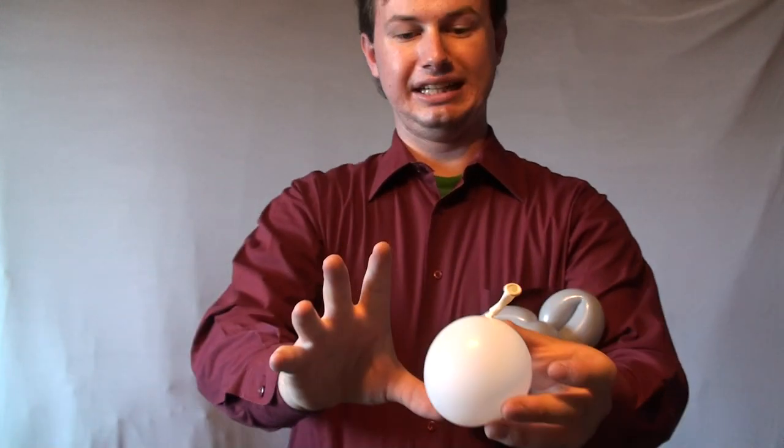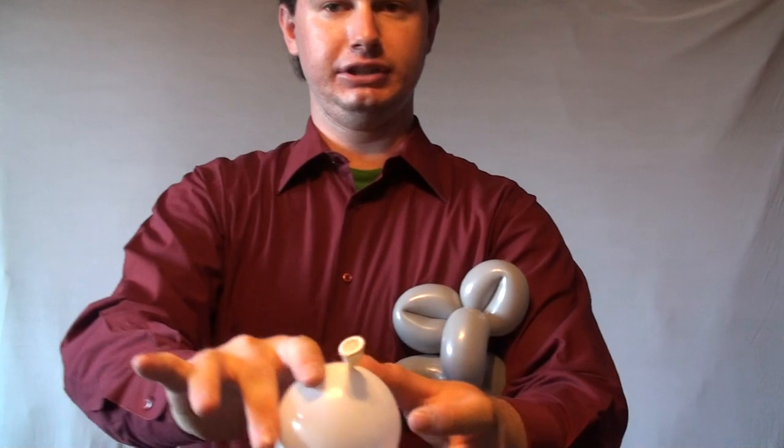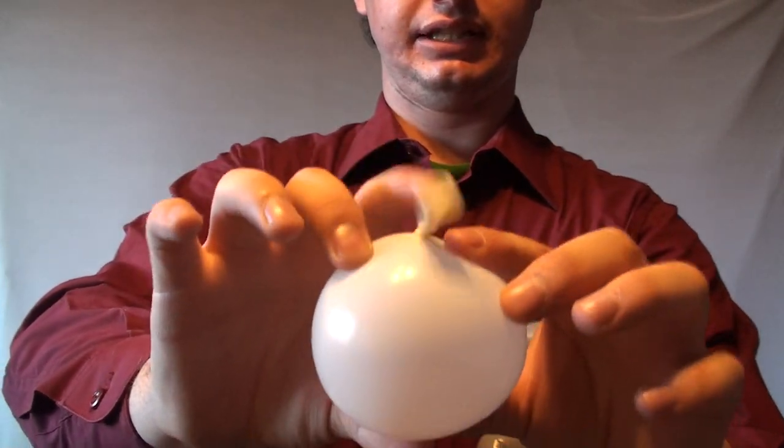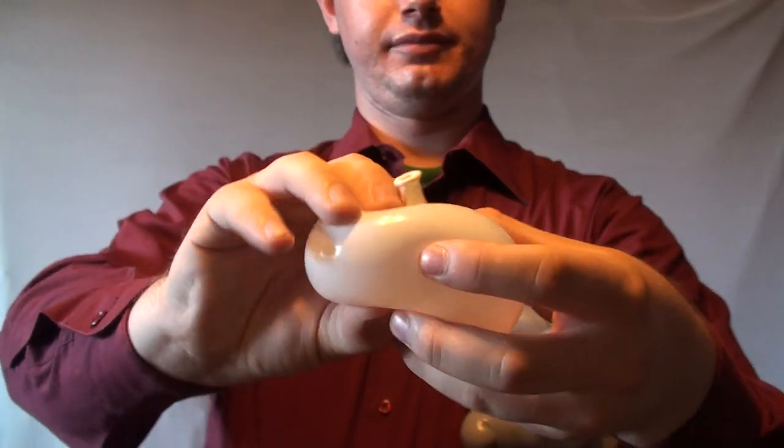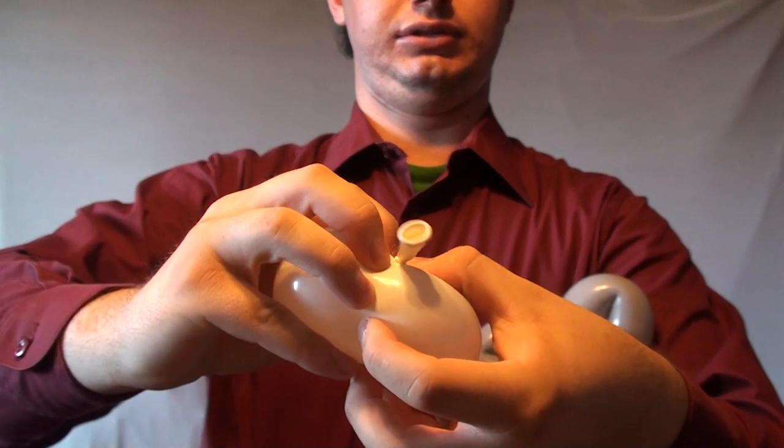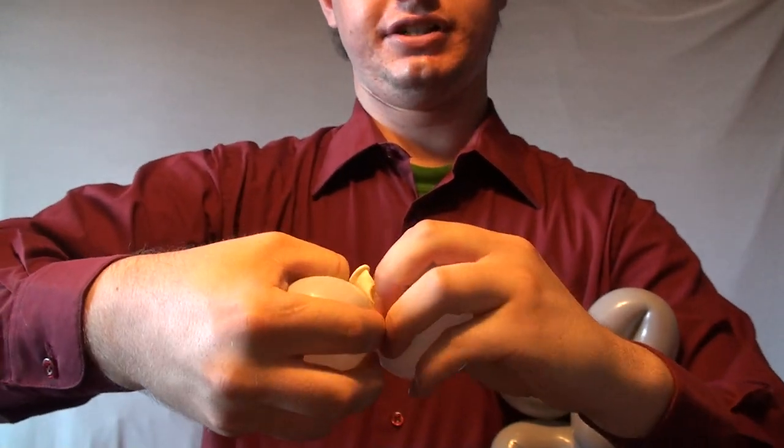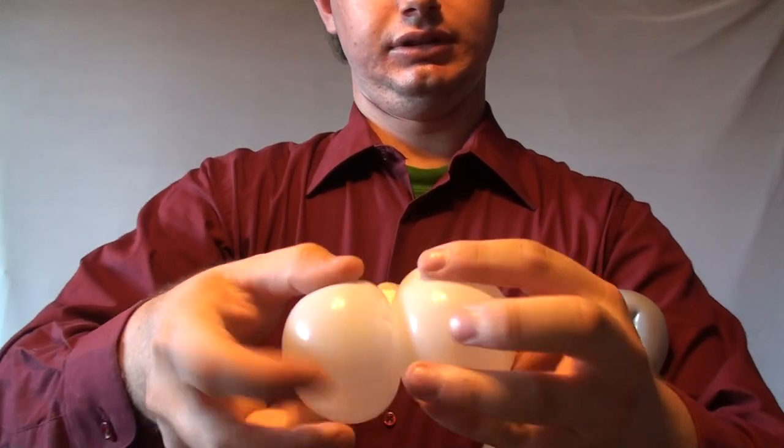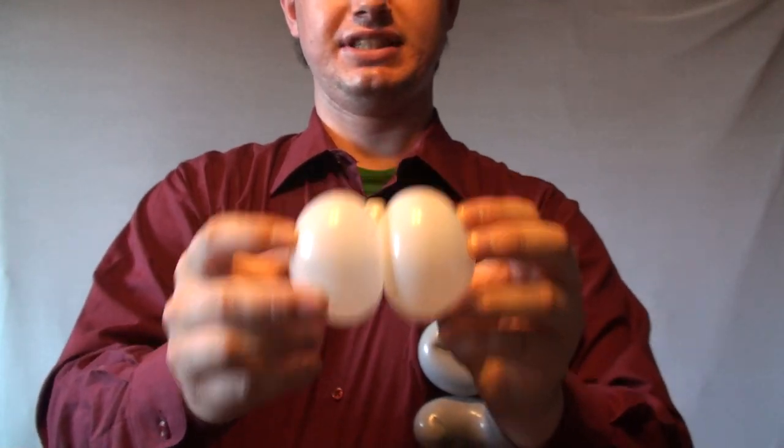So we're going to take this and we're going to split it in half. If you don't know how to do that, take both ends - you got the nozzle up here, got the knot on the bottom. You're going to grab your spheres and rotate. So they should be about the same size.